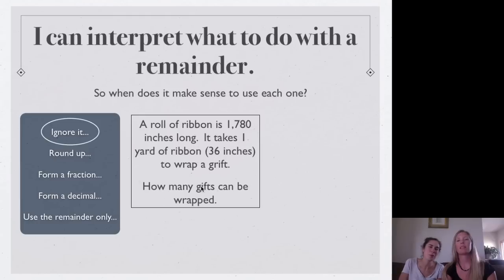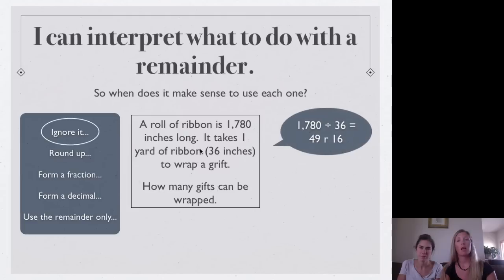And I have a spelling mistake. Oh, whoops. Ugh, rats. So how many gifts can be wrapped? So I'm going to just give you the answer because you already know how to divide and that's not what this lesson is about. This lesson is about figuring out what to do with that remainder. So when you take that 1,780 and divide it by the 36 inches to wrap a present, you get 49 with a remainder of 16.